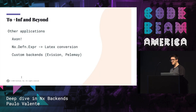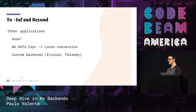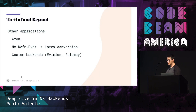We can also, for instance, take a DEFN expression — and Quinn, who is in the audience right now, took a DEFN expression and converted it to LaTeX, which is really cool. And there are other backends in the community — for instance, Evision, which binds OpenCV but has a compatibility layer for NX as well, and Paleme, which aims to compile for native code as well, but through other processes.